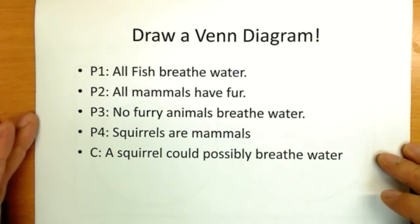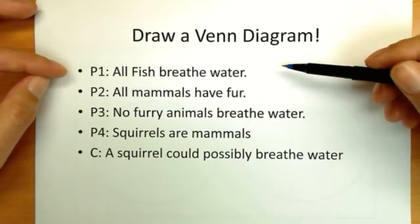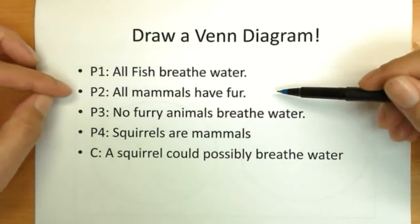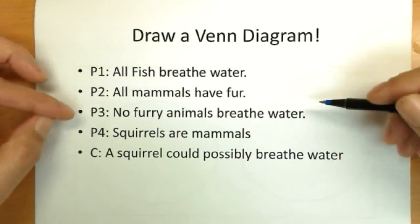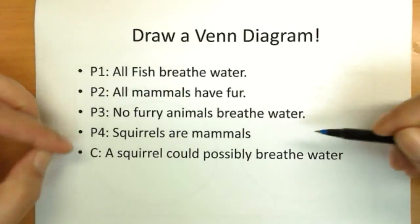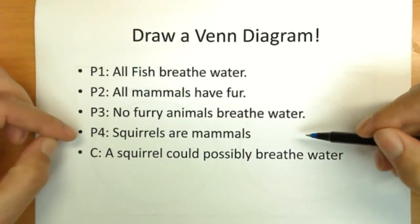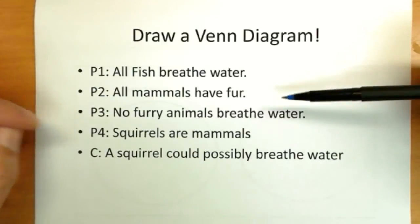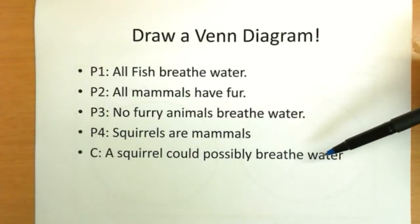On to our next Venn diagram. Premise one, all fish breathe water. Premise two, all mammals have fur. Premise three, no furry animals breathe water. Premise four, squirrels are mammals. And the conclusion, a squirrel could possibly breathe water. So the conclusion says it's possible. Is it possible that a squirrel could breathe water?